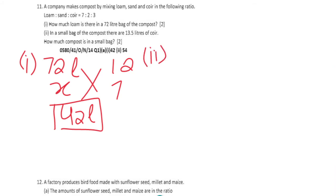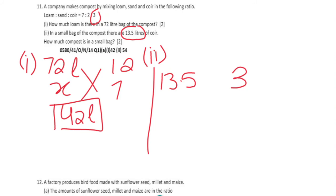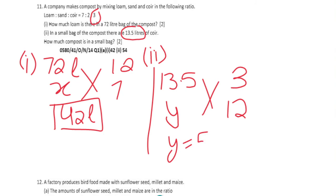Part 2: In a small bag of compost there are 13.5 litres of coal. Coal is represented by 3 parts, and total compost is represented by 12 parts. Cross multiply: 13.5 times 12 divided by 3 gives us 54 litres of compost.